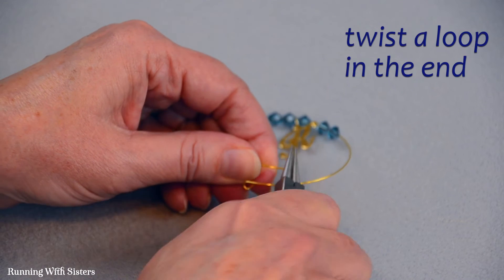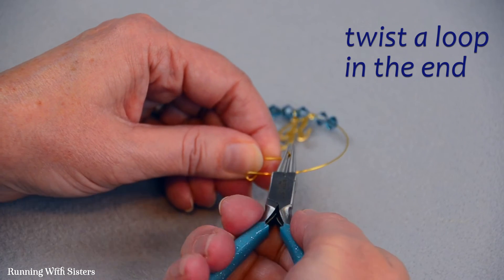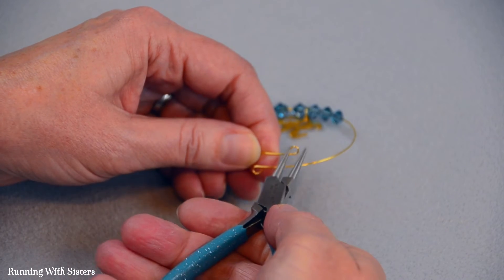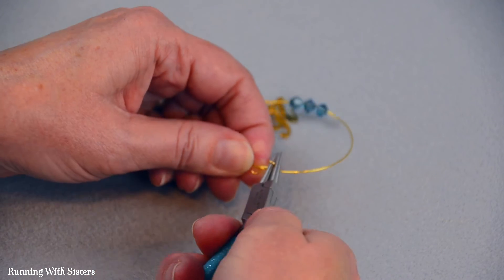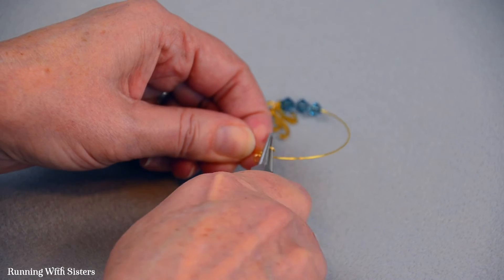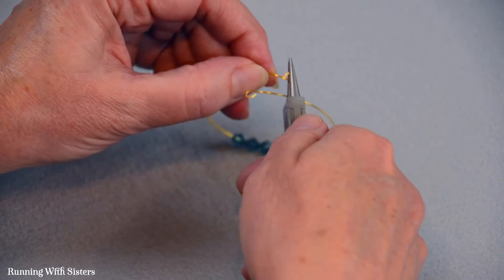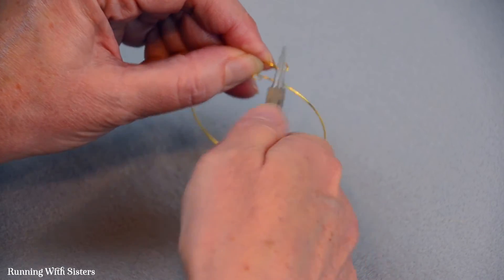And just give it a little bit of strength to twist that loop in. I'm letting the pliers do the round work. Like I'm just bending it around the jaw of the pliers. And then I'm just going to flatten it across like that to make sure the loop meets the wire.